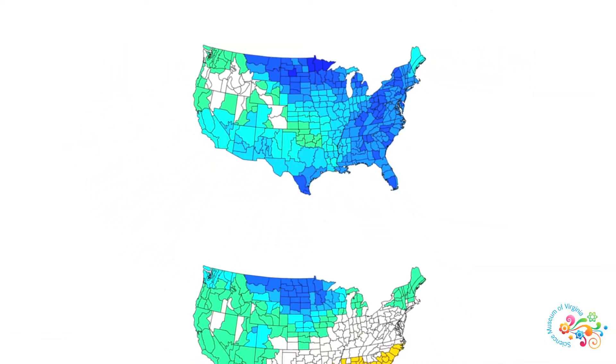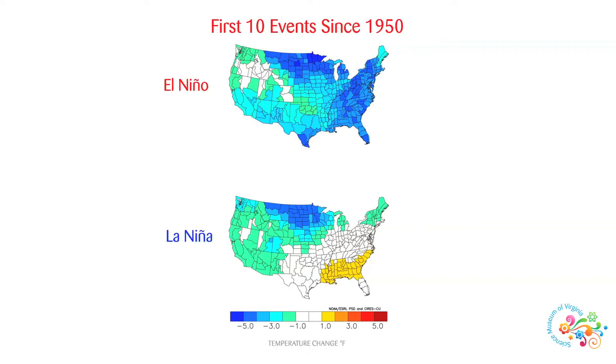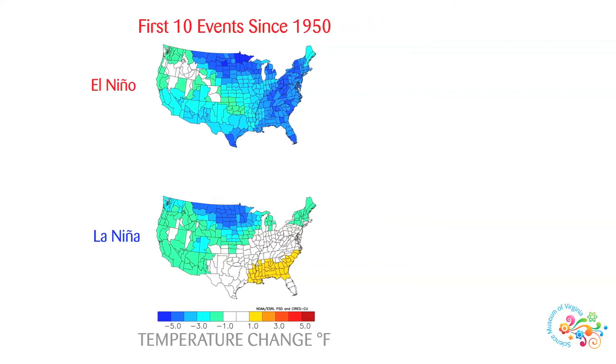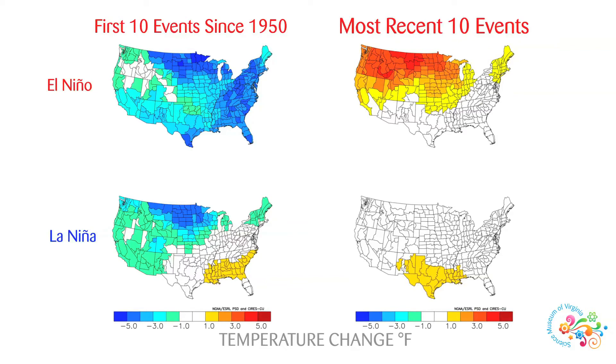Scientists are noticing some interesting trends in these climate patterns. If we look at the first 10 El Nino and La Nina events since 1950 and compare them to the most recent 10 events, a signature of seasonal continental warming consistent with human-caused climate change emerges.